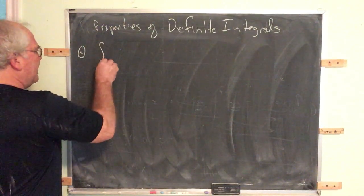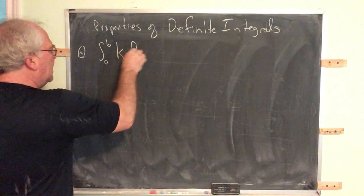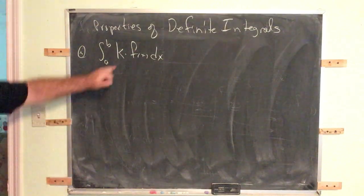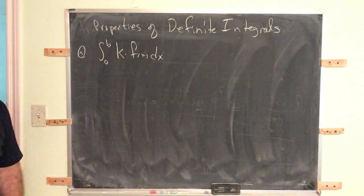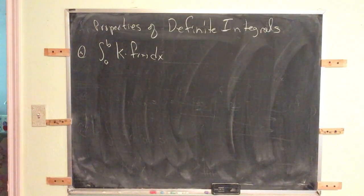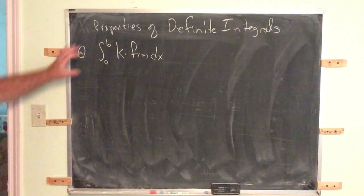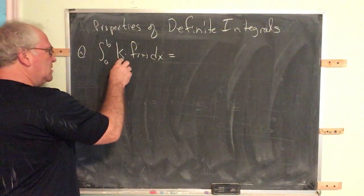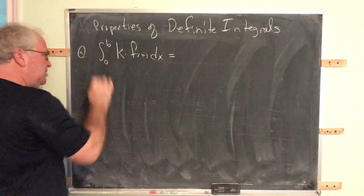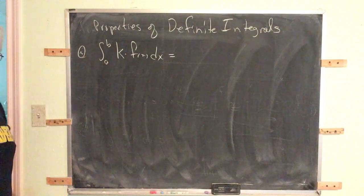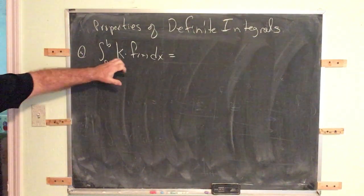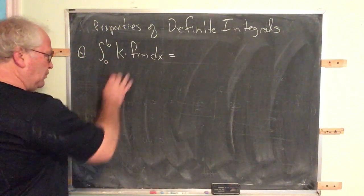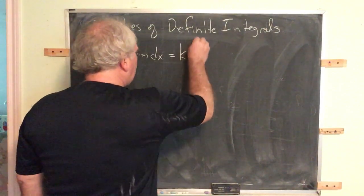The first property is: the integral from a to b of k times f(x) dx — so this is a constant times a function. Constant multipliers multiply along. We may take this constant multiplier from inside the integral and factor it out. This is the limit of a summation, and we know that for summations and limits, constant multipliers multiply along. So this property is inherited from the structure of the Riemann sum that went into this.